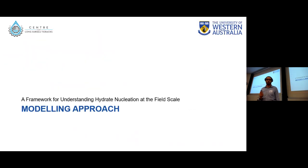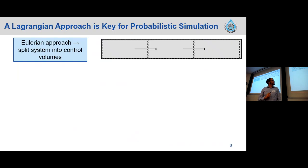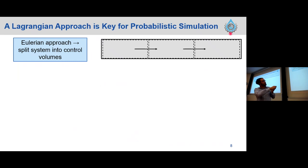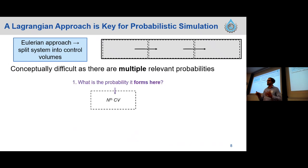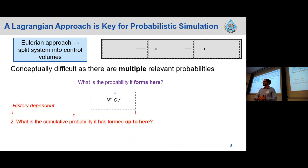Now I'll run you through some background on how the model actually works. Traditionally in a flow line simulation you would take an Eulerian approach — you take your system, represented as a pipeline (a gray rectangle), split it into control volumes, and assume properties are constant in each control volume. For a probability-based simulation this is challenging because there are lots of different formation probabilities to keep track of. For the nth control volume you need to understand three different formation probabilities: the probability it forms in that section, the probability it has formed up to that section, and both of these depend on the history of the fluid throughout the entire system.